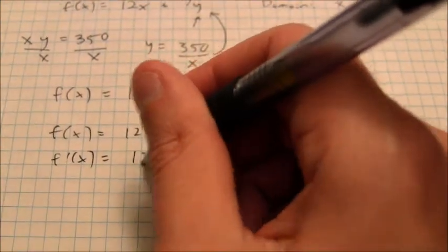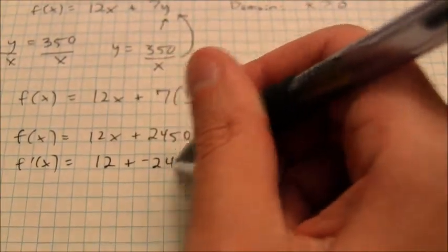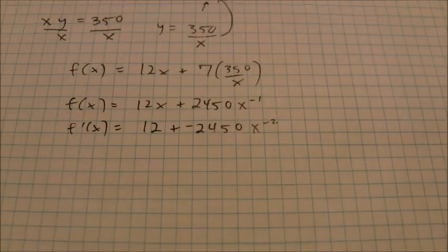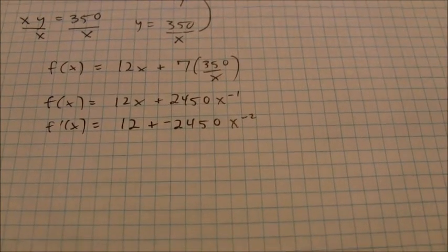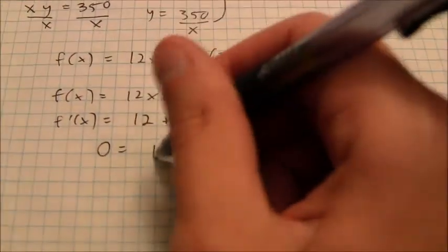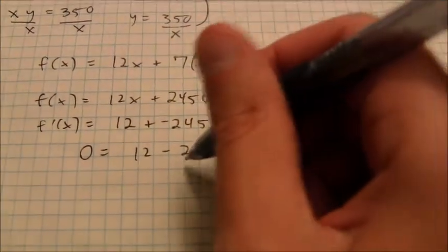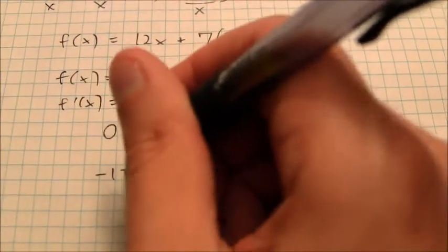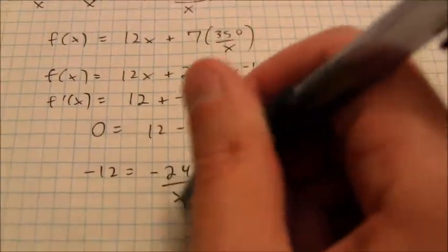And so, in this case that's going to be 12 plus, that's a negative 2450 x to the negative 2. I'm going to take the derivative and I want to find out what's going to make that equal to zero. So, I'm going to say zero equals 12 minus 2450 over x squared, write it in that form. So, I have negative 12 is equal to negative 2450 over x squared.